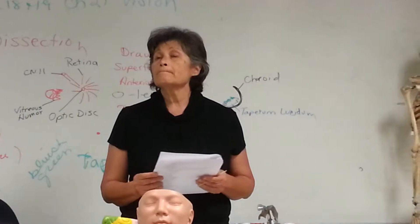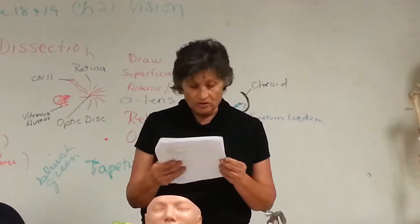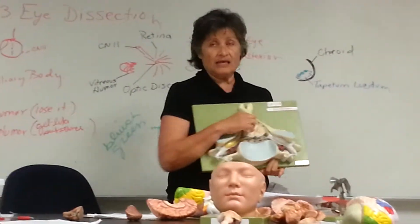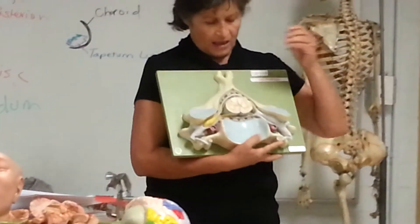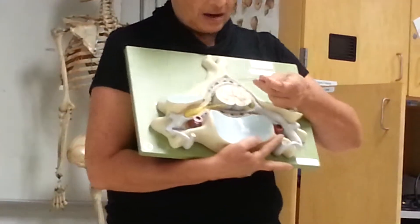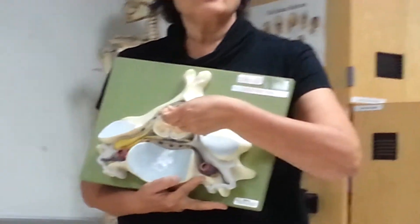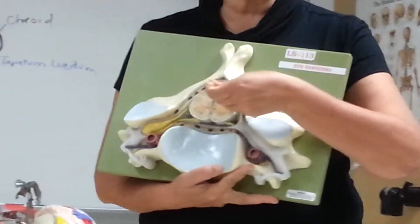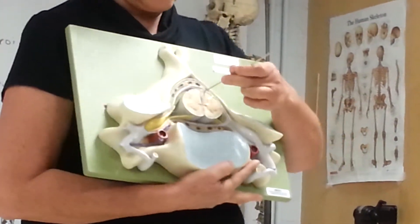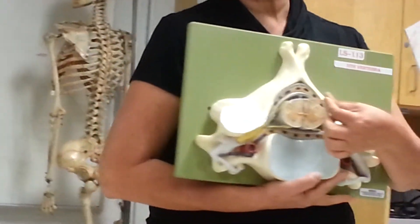What about the subarachnoid space? So, if the pia mater is the innermost layer and the dura mater is the outermost layer, then the one in the middle is the arachnoid mater, and the space below it — where my stick now is sitting — is the subarachnoid space.